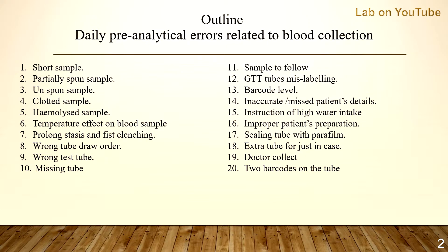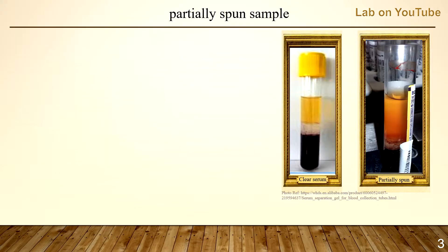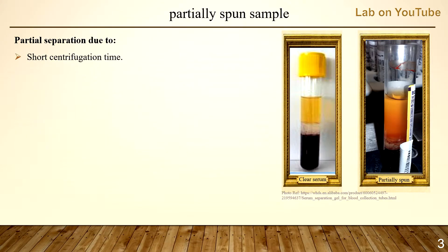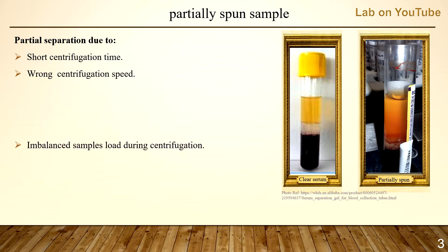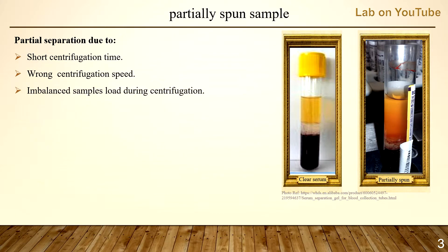Let's move on and talk about the second pre-analytical error in our list: partial spin sample. Partial spin sample can be due to short centrifugation time, wrong centrifugation speed, imbalance in sample load during centrifugation, or centrifuge mechanical error.